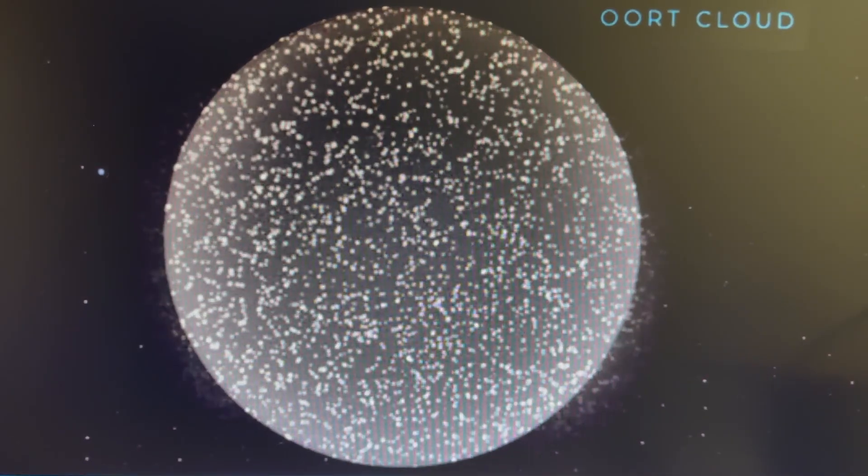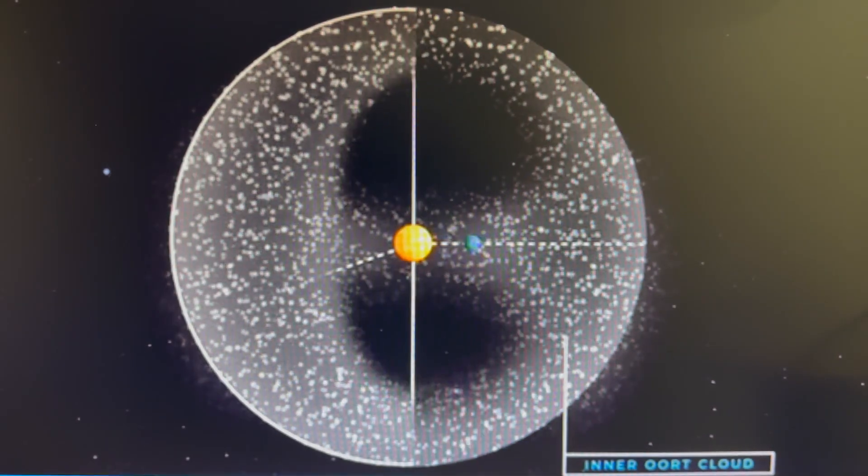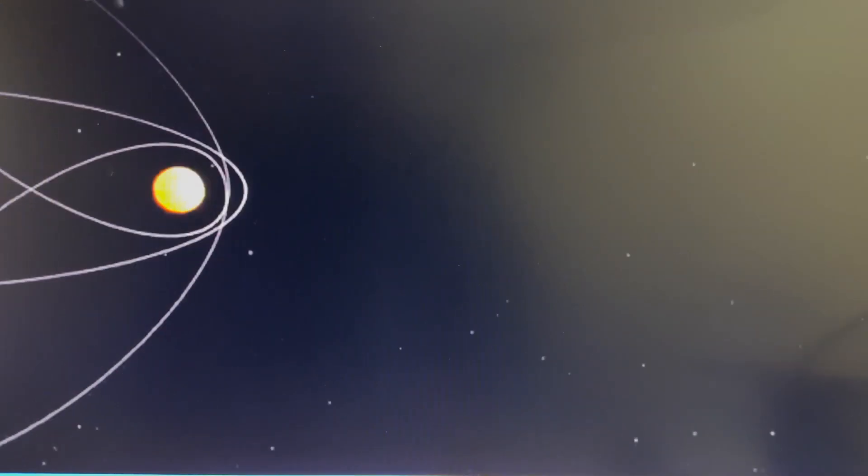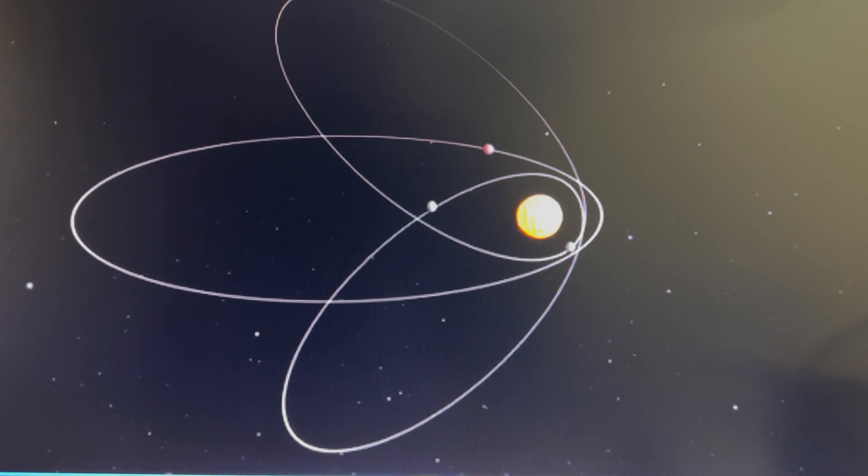The objects in question are located in the inner Oort cloud, a mysterious region that surrounds the solar system like a bubble. The group has complementary orbit patterns that swing far out in the same general direction, and then cluster as they round the Sun.